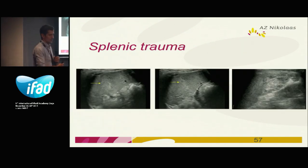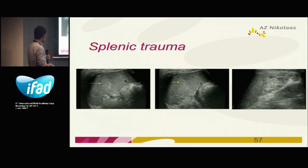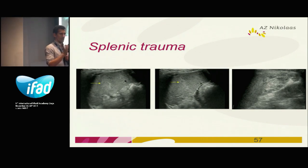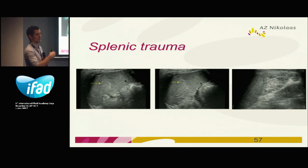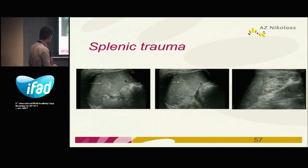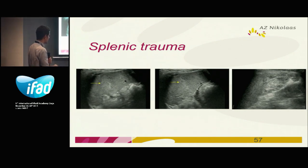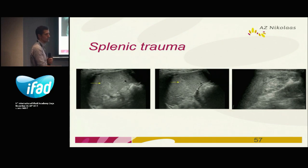Abdominal trauma is much more difficult. For those working in the emergency department, this for example is a splenic trauma — the only thing you appreciate here is a hyperechoic region. In patients with abdominal trauma, it's very difficult to see splenic or liver lesions, especially in the first hours. In the first hours, you can only appreciate a hyperechoic region. Afterwards it's obviously easier — this is day four, then you see the hematoma clearly. But in the first hours after an accident, ultrasound isn't that good.